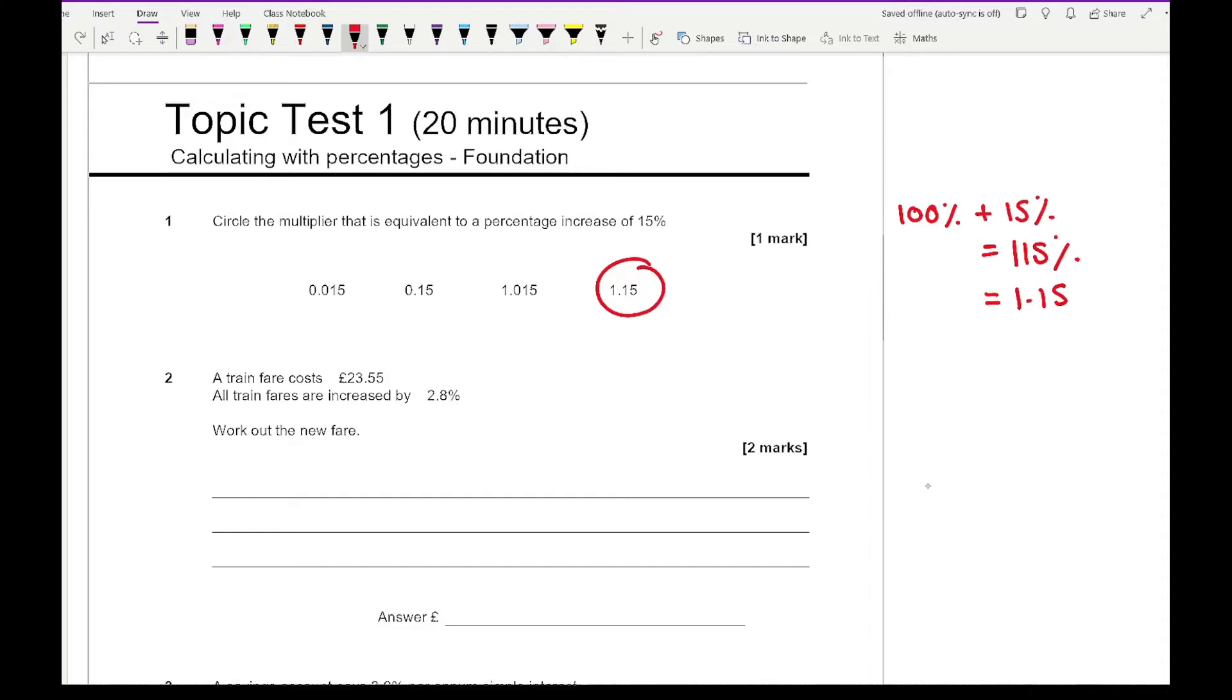Question two says that a train fare costs £23.55. All train fares are increased by 2.8%. Work out the new fare. The first thing we want to do is work out the decimal multiplier. Start with 100, add 2.8 which gives us 102.8, and then convert that as a decimal by moving the decimal point two places to the left giving us 1.028.